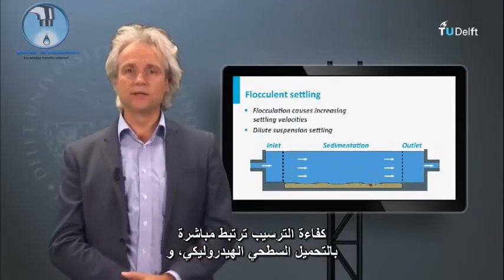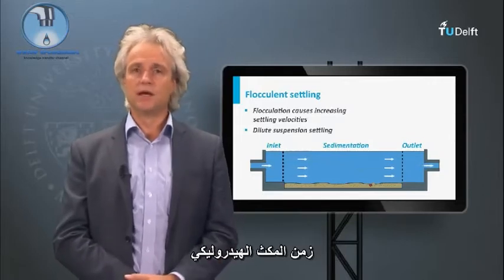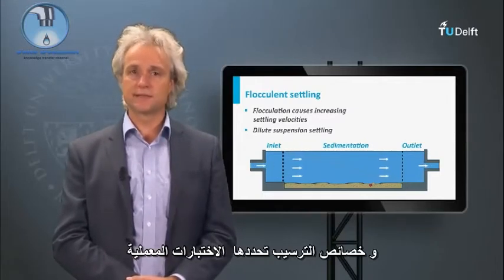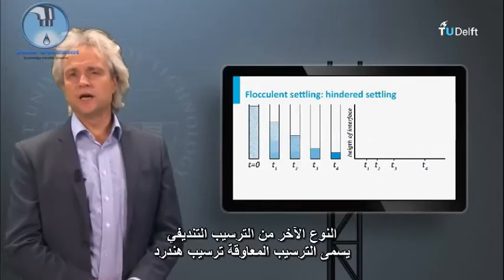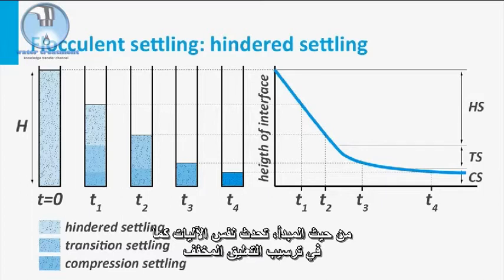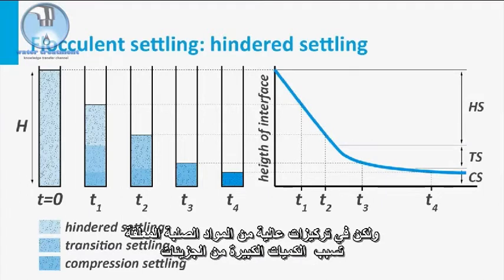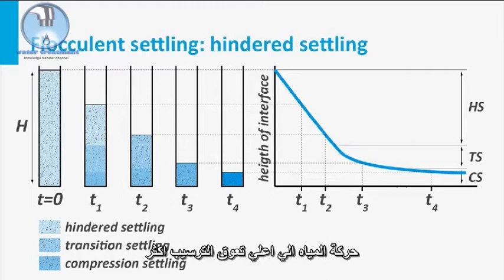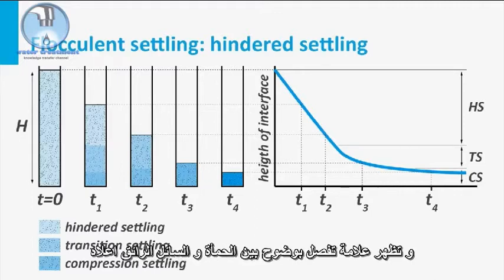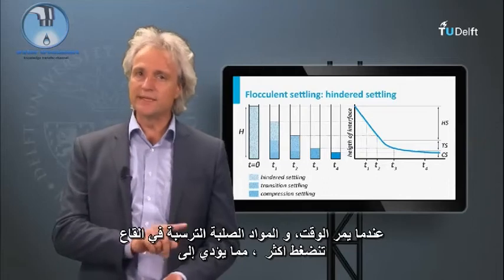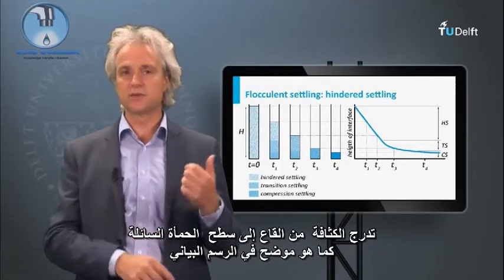The settling efficiency is directly related to the hydraulic surface load and the hydraulic retention time. There are no mathematical formulas to describe the process, and sedimentation characteristics are determined by laboratory tests. The other type of flocculent settling is the so-called hindered settling. In principle, the same mechanisms occur as in dilute suspension settling, but at high suspended solids concentrations, the large quantities of particles cause multiple interactions, resulting in a slow downward movement of particles. The upward water movement further hinders settling. A clearly marked interface between sludge and supernatant liquid occurs. When time passes, the settled solids at the bottom further compress, leading to a density gradient from the bottom to the sludge-liquid interface, as illustrated in this graph.